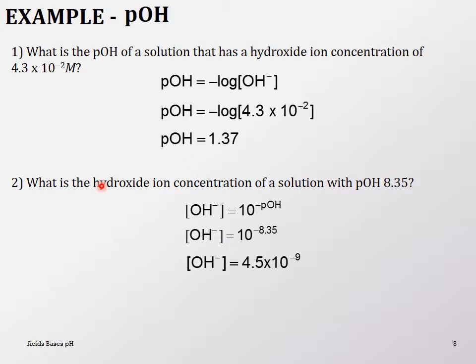What is the hydroxide ion concentration of a solution with pOH = 8.35? You take the antilog of 8.35 on your calculator. Since the pOH is 8.35, you should expect your answer to be around 10⁻⁹ or 10⁻⁸.